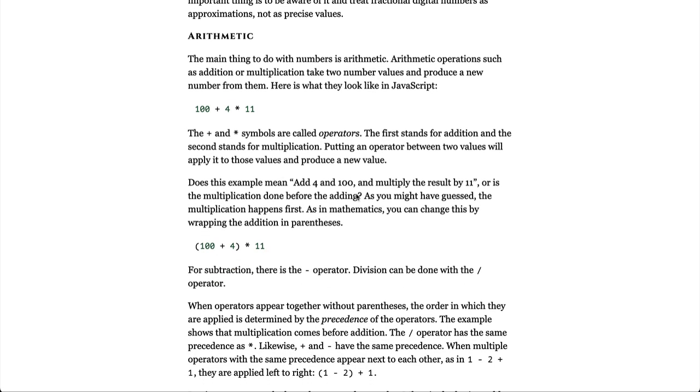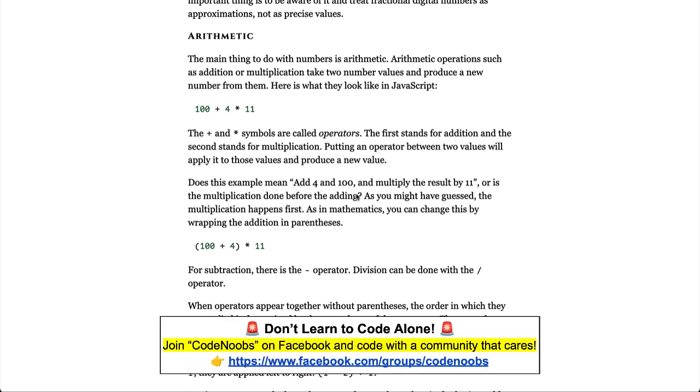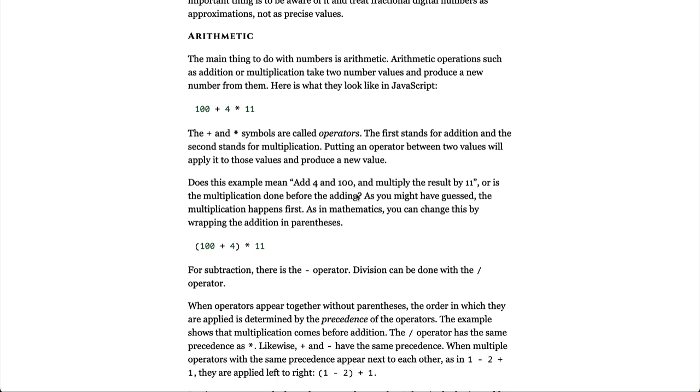Arithmetic. The main thing to do with numbers is arithmetic. Arithmetic operations such as addition or multiplication take two number values and produce a new number from them. Here's what they look like in JavaScript. The plus and multiply symbols are called operators. The first stands for addition and the second stands for multiplication. Putting an operator between two values will apply it to those values and produce a new value.